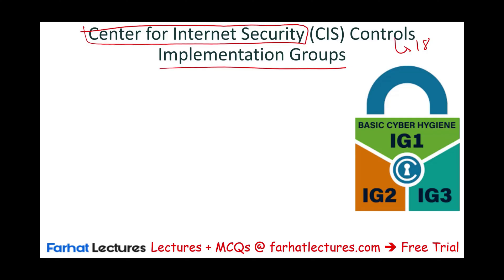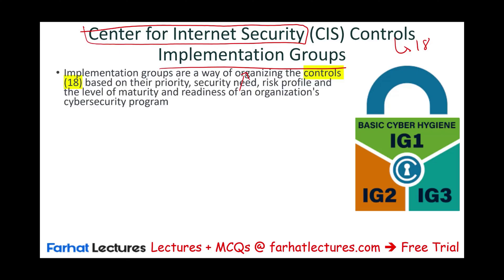In this session, we're going to be discussing the implementation groups. Because once we understand what the Center for Internet Security is, and once we understand what the three implementation groups are, then once we learn about the controls, we know how these controls fit within each implementation group. So implementation groups are a way to organize the controls.